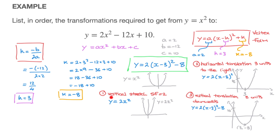We've just listed the transformations required to get from y equals x squared to the parabola we were given. Remember: as soon as you have to list the transformations to get from y equals x squared to any parabola, all you have to do is rewrite the parabola's equation in its vertex form. Once that's done, simply list the transformations in the order in which you come across them in the vertex form. That's it for this tutorial.